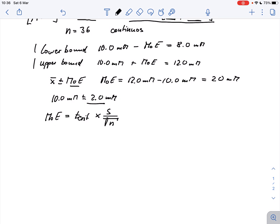So what we really want to know is this standard deviation, so all we need to do is rearrange this equation and we get s, standard deviation, equals the margin of error times the square root of the sample size divided by the t critical value.